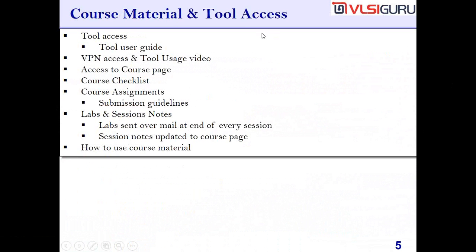Regarding course material and tool access: when you register for the course — either through online fee transfer or cash payment — you get access to the required tools. You should also be getting access to the tool user guide and VPN access, through which you will get the tool access. For every tool, we have videos explaining how to use it. For example, if you are using Synopsys ICC, we'll have a half-hour to one-hour video explaining how to invoke the tool and use different options.